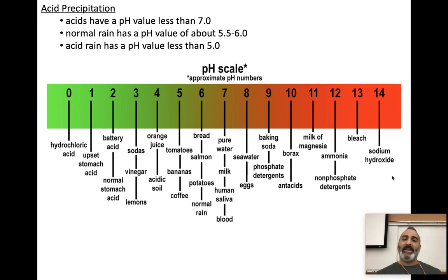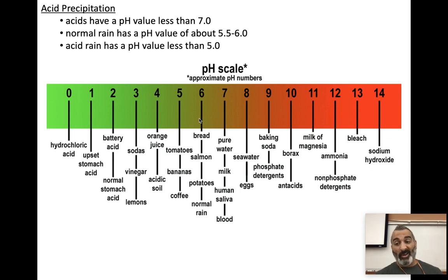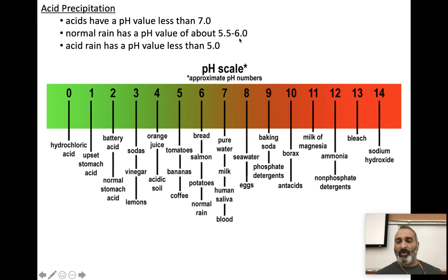Acid rain, or acid precipitation, is the next human impact. Here's a pH scale: 7 is neutral, ocean water is about 8. Anything below 7 is an acid. Acid rain is generally less than pH 5. Normal rain is around pH 5.5 to 6 — not pH 7 as many people think. Why is normal rain a little acidic? Because carbon dioxide in the air makes carbonic acid, so rain is naturally slightly acidic, like carbonation in soda. When other pollutants rise and lower the pH below 5.5, that's when it becomes acid rain.